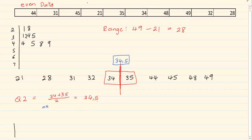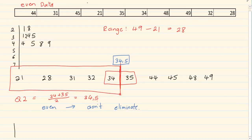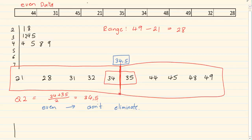When the median is not part of the data — which happens with even numbers — you do not eliminate. So with even numbers you don't eliminate; you note your Q2 and look at the left-hand side for Q1 and the right-hand side for Q3 without removing anything. On the left we have 5 terms: 5 divided by 2 is 2.5, so the 3rd term gives Q1 = 31. On the right we have 5 terms: 5 divided by 2 is 2.5, so the 3rd term gives Q3 = 45. Therefore Q1 = 31 and Q3 = 45.